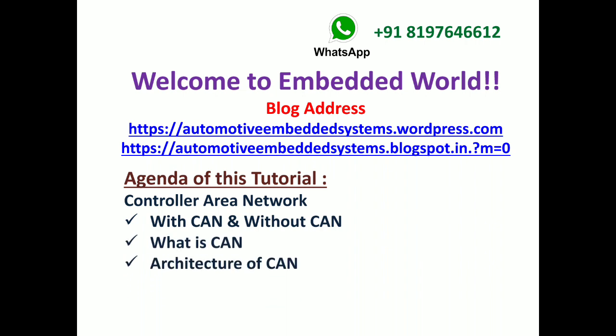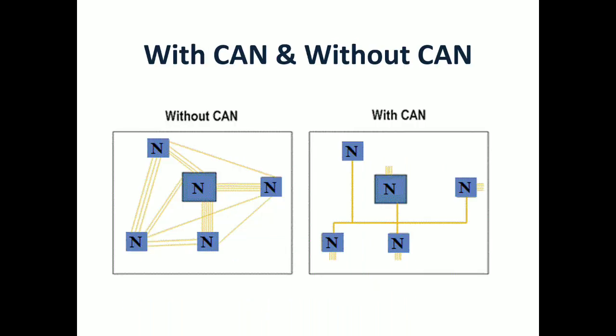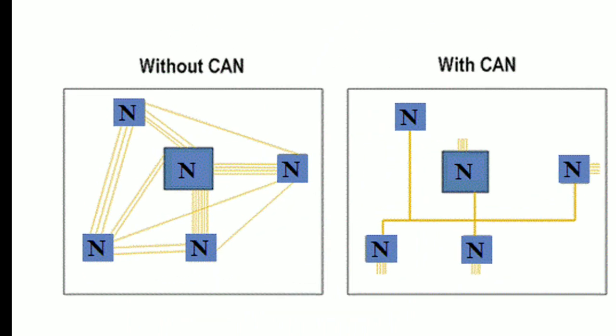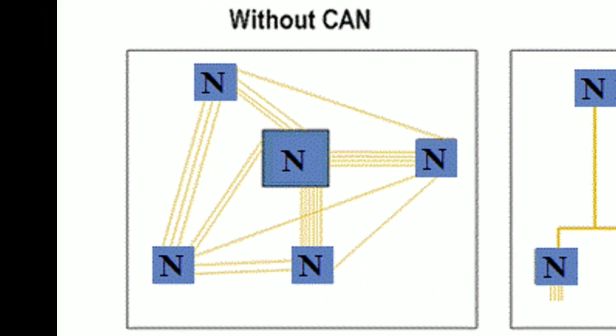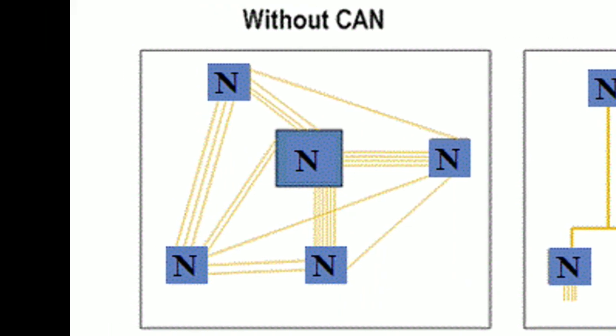This is the first example of without CAN and with CAN. Without CAN in the olden days, before the 1990s, all nodes (individual ECUs) used to communicate directly, which means the wiring harness became extensive. Wiring harness is the bunch of wires. But if you include CAN, the wiring harness is very minimal.